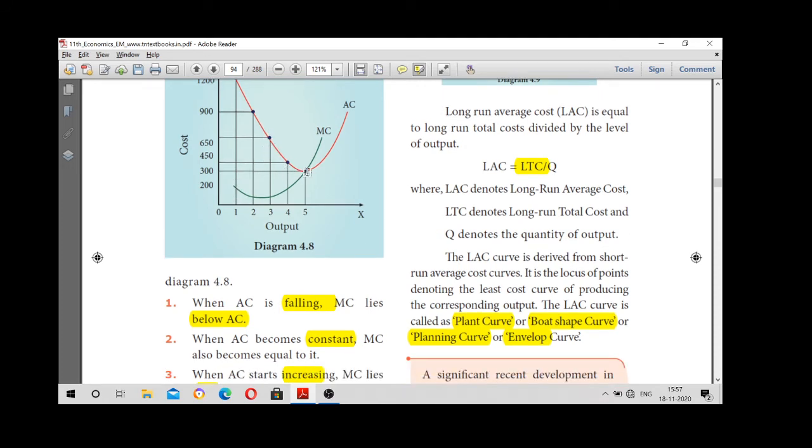When it's constant, what happened to MC? MC is also constant. This is the lowest point. Both AC and MC are equal.